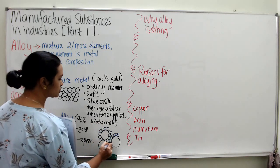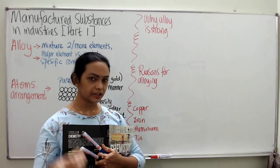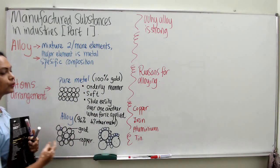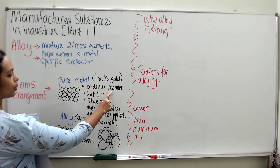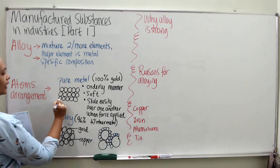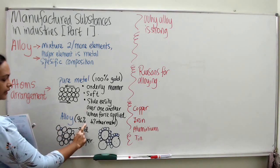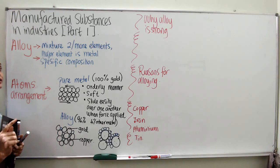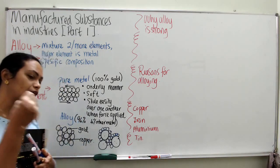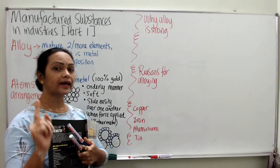At least three atoms of the major metal, and the smaller atoms must represent the atoms added into the metal to show how alloy looks. I hope you can understand the difference in atom arrangement. For pure metal, they are in orderly arrangement — soft and can slide over one another easily when force is applied. For alloy — say 96% gold, 4% copper — since copper has a different size, it fills the gaps between the metals. Can you see the orderly arrangement has been disturbed?